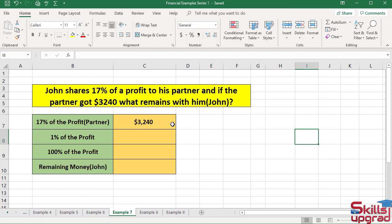I will calculate the remaining profit of John using the unitary method. First, I calculate 1% of the profit.